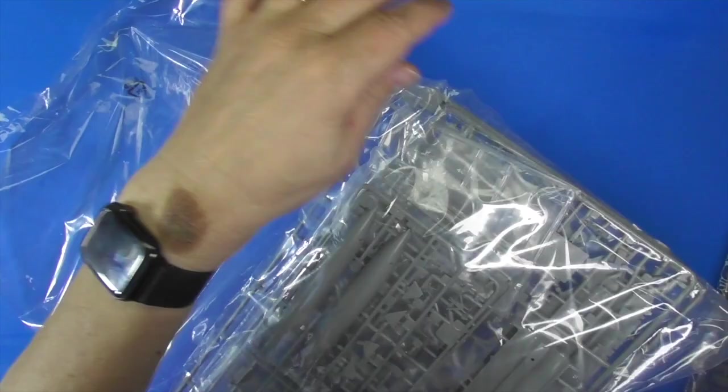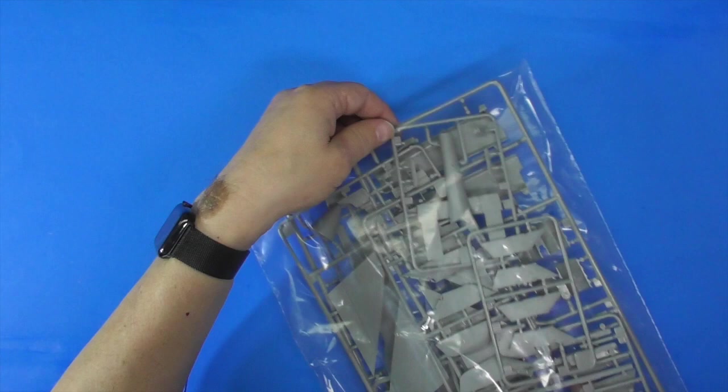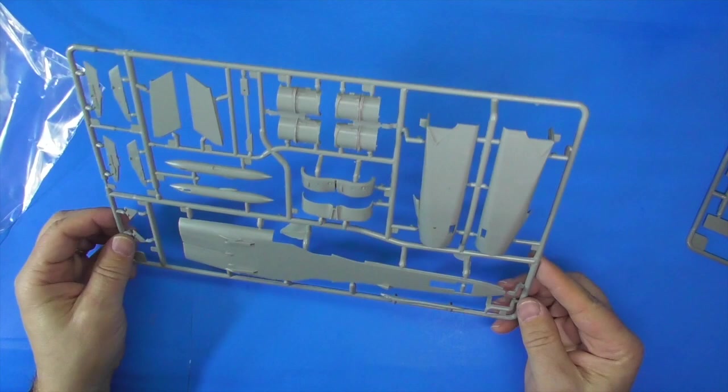I don't think I need that bag anymore. So looks like about 14 sprues. They're bagged in multiples. At least they're not all bagged together. Let's start here. So we got the lower part of the fuselage, the nose, the engines, the reverse thruster buckets, a couple of pylons. Looking really good.